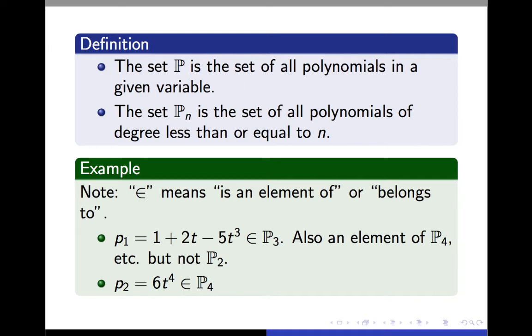So, for example, P1 equal to 1 plus 2t minus 5t cubed is an element of P3, because its degree is less than or equal to 3. It's also in P4 for the same reason, because its degree is less than or equal to 4. But this polynomial is not in P2, because the degree, which is 3, is bigger than 2. Likewise, 6t to the 4th is in P4, and it would also be in P5 and P6 and so on, but it would not be in P3.